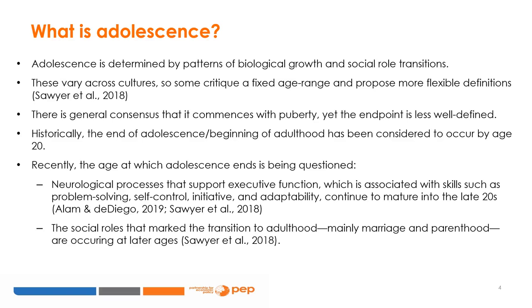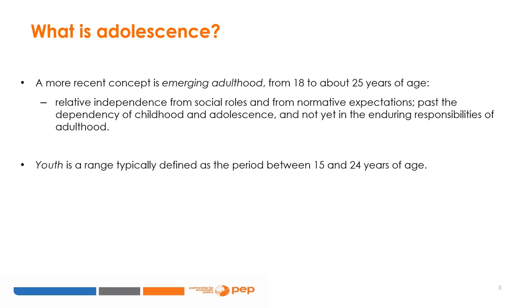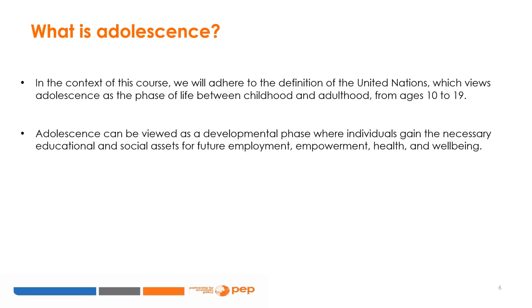Additionally, some biological changes — specifically neurological processes and development of executive functions — continue to occur into the late twenties. Other concepts have recently emerged, such as youth (15 to 24 years of age) and emerging adulthood (18 to 25 years of age). Nonetheless, for the purpose of analysis and targeted policies, it is important to reach a consensus. For this course, we will adhere to the UN definition of adolescence as the phase of life between childhood and adulthood, broadly defined as ages 10 to 19.